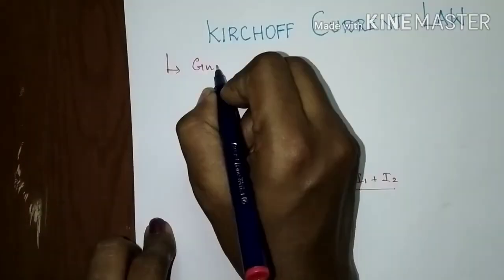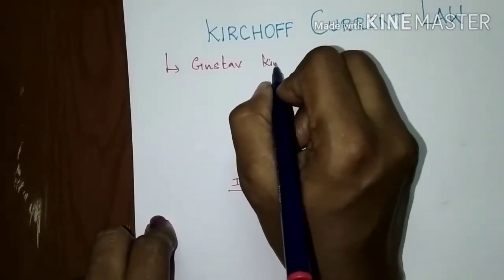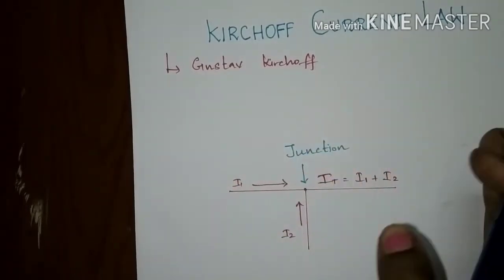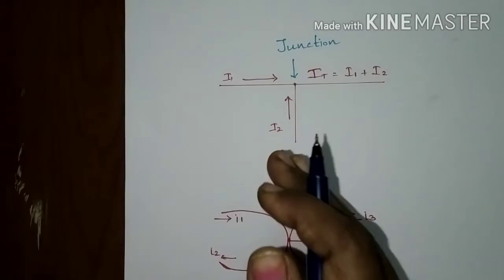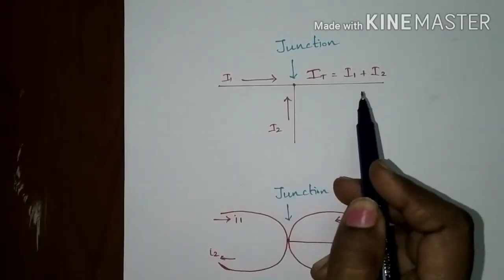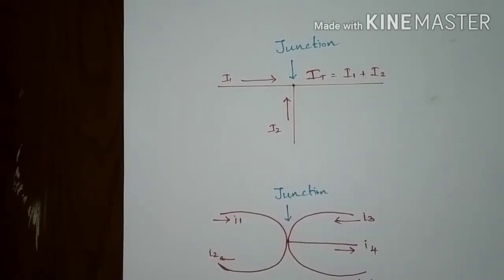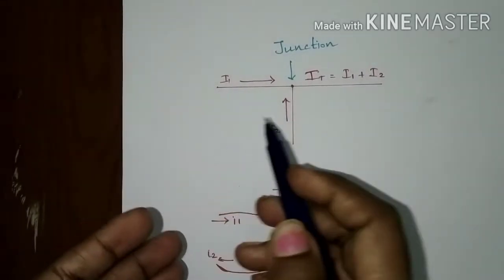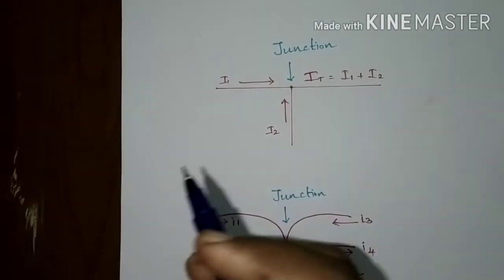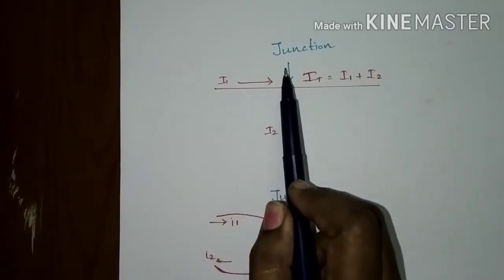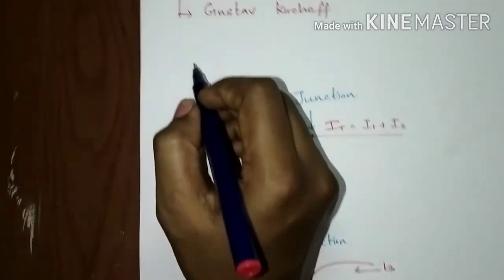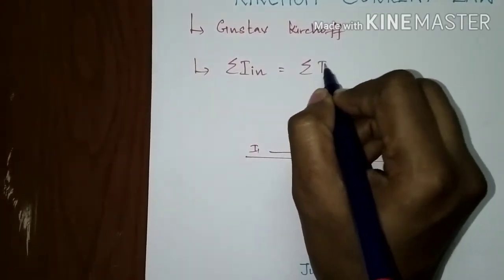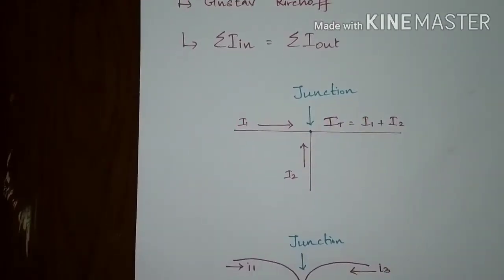Kirchhoff's current law is one of the fundamental laws used for circuit analysis. It was invented by scientist Gustav Kirchhoff. His current law states that for a parallel path in a circuit, the total current entering a circuit junction is exactly equal to the total current leaving the junction. This is because the charge entering or leaving doesn't have any other path to go. In other words, the algebraic sum of all the currents entering and leaving the junction must be equal to zero. That expression can be given as: summation of current entering equals summation of current leaving.